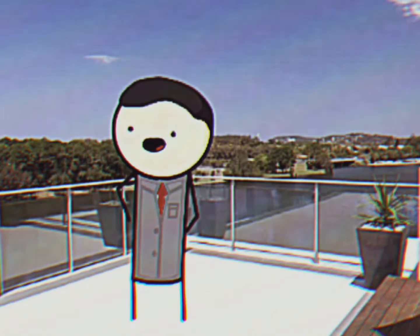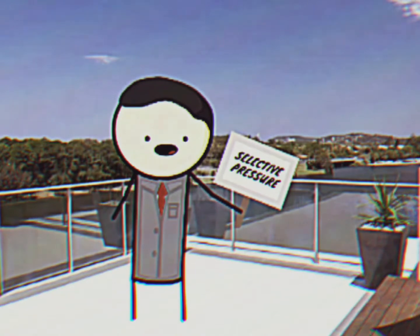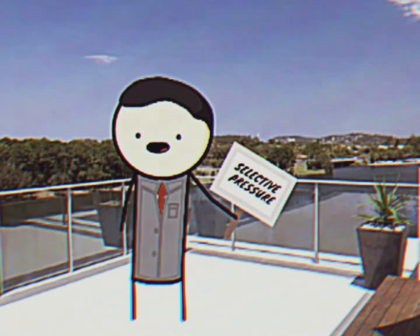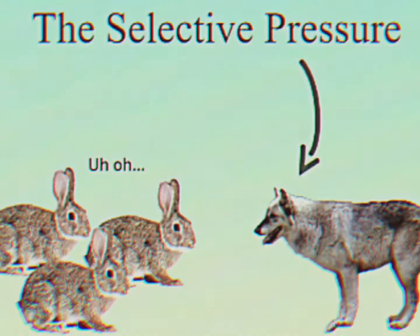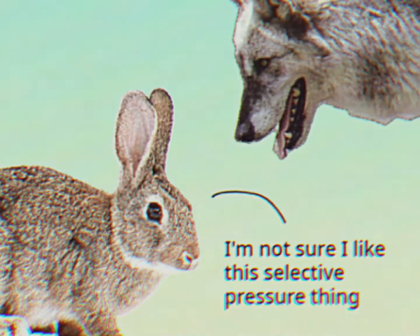Now let's get down to the natural selection part of all this. How did there come to be so many human-preying mosquitos today? Well, that, my friends, is all because of selective pressure. Selective pressure is an environmental aspect that causes a group of organisms to die out. For example, the visual shown before you shows that the wolf is the selective pressure, as the wolf preying on those rabbits causes that rabbit population to decline — because they've been eaten.